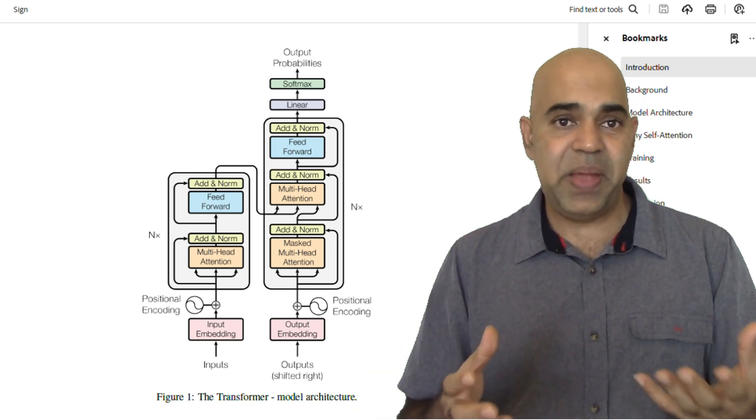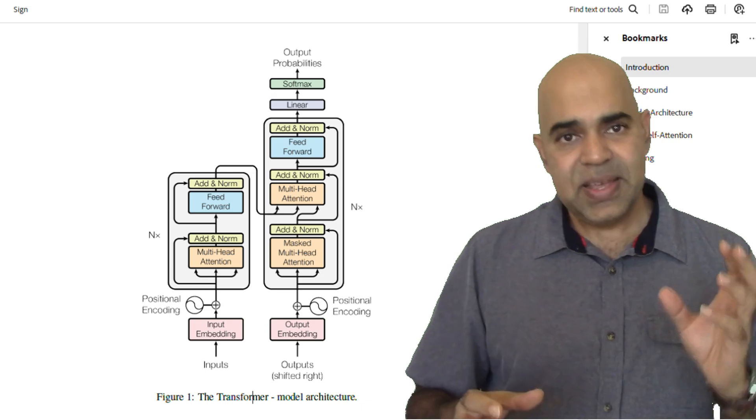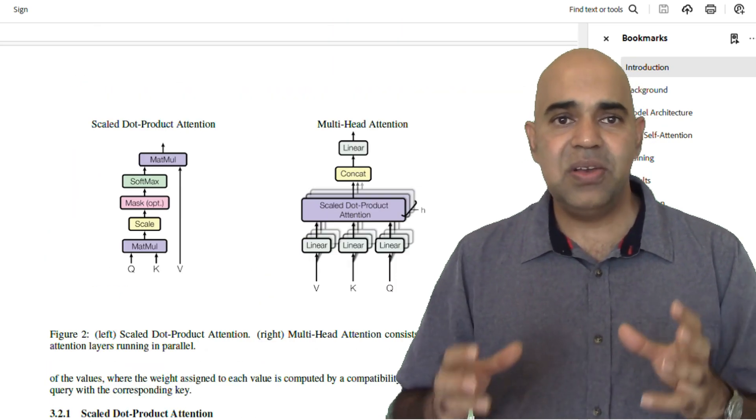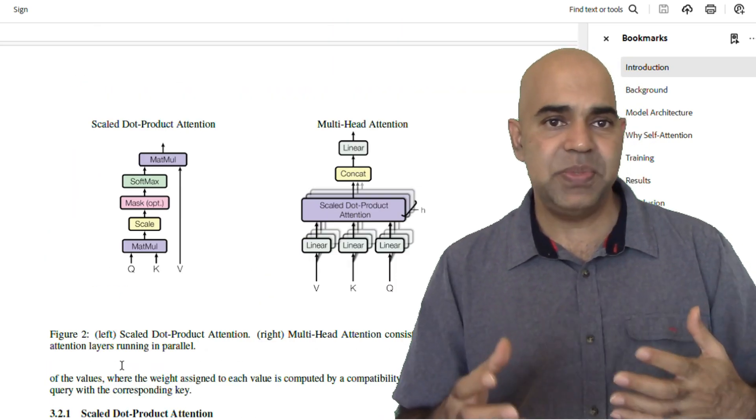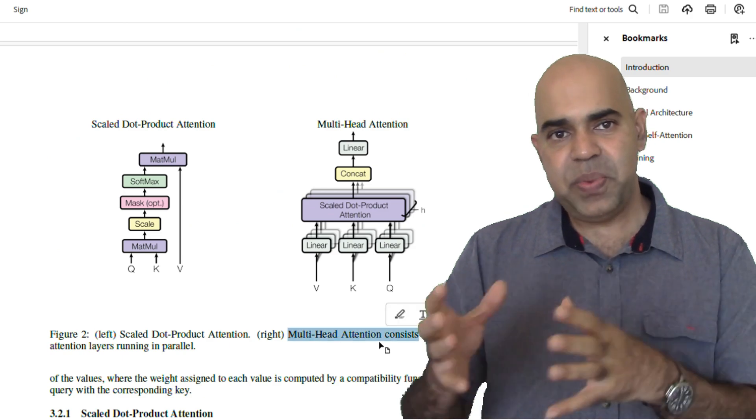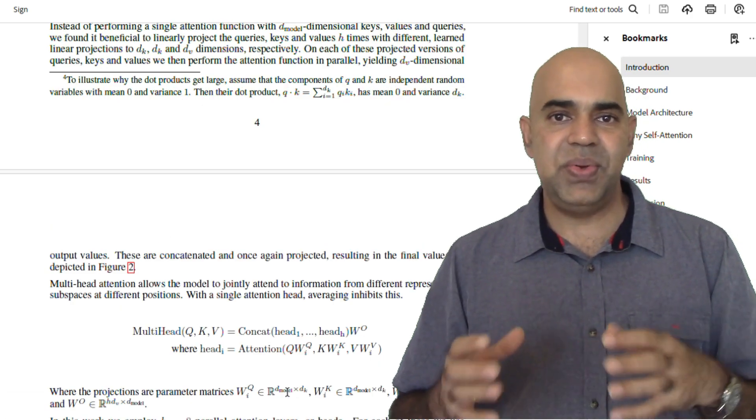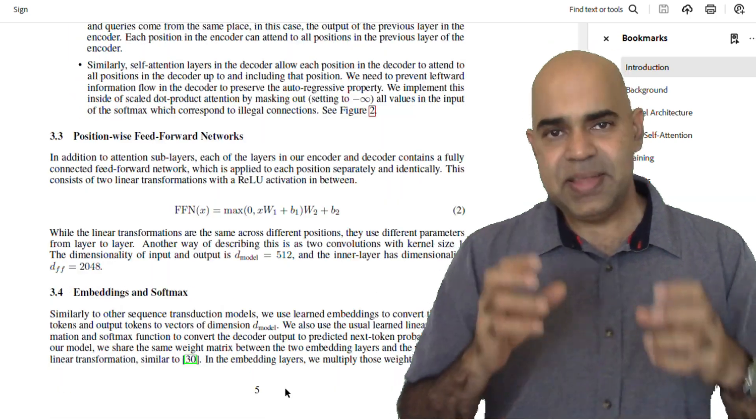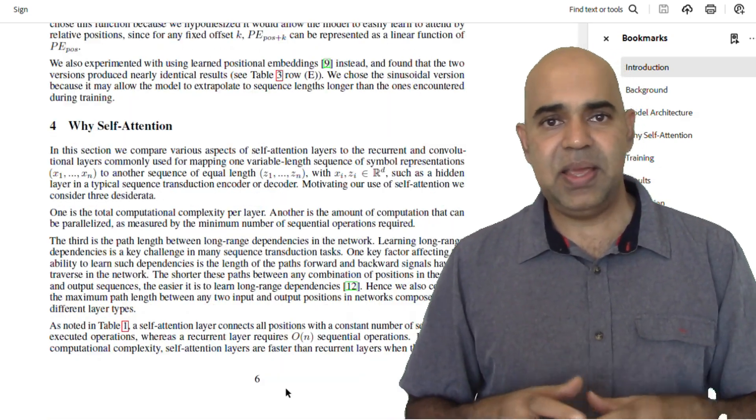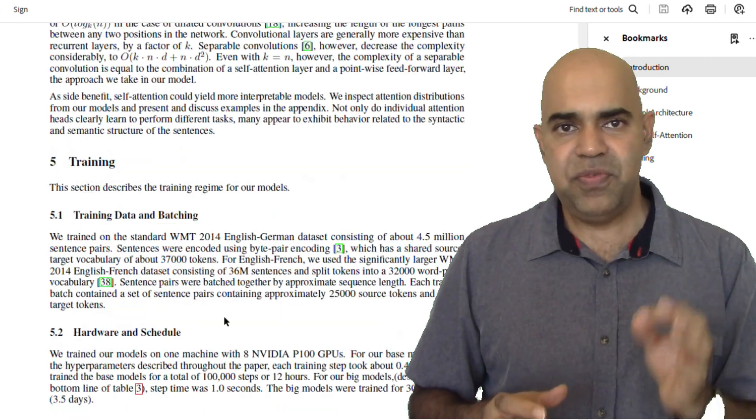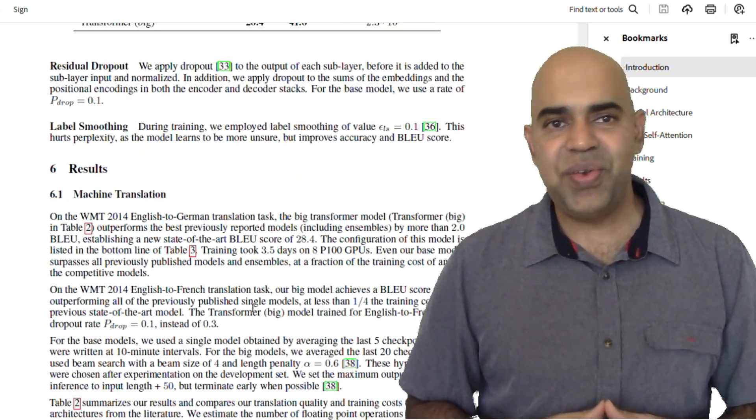The transformer model is based on attention mechanisms, specifically a variant called self-attention, which helps the model to process different parts of the input data in parallel and weigh their relevance to each part of the output. This parallel processing capability makes transformers very efficient for large-scale training.